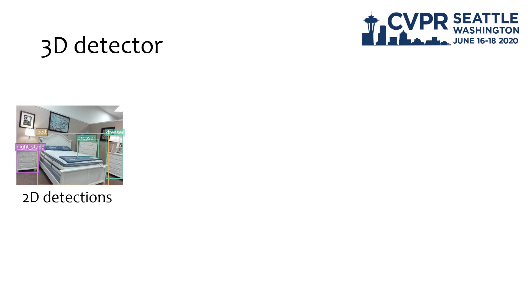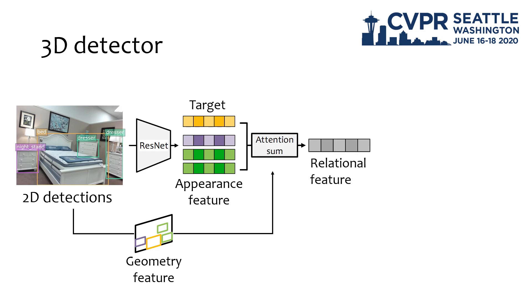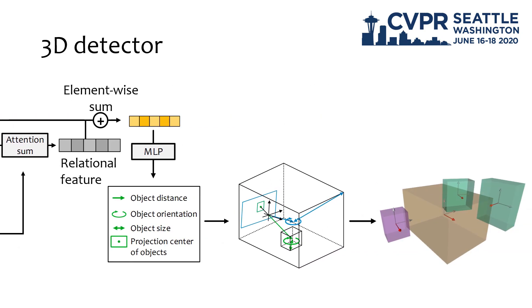For the 3D object detector, from the source image we firstly go through a 2D detector to produce 2D bounding boxes. Then for each object, we produce the geometry feature from their 2D detections and use ResNet to generate the appearance feature. After that, we utilize the attention module to obtain the relational feature from the target object to its surroundings. Then for each target, we add its appearance feature to the relational feature and predict the bounding box parameters like the object size, orientation, and location in the camera system. So the 3D detector will produce all the bounding boxes in the scene.